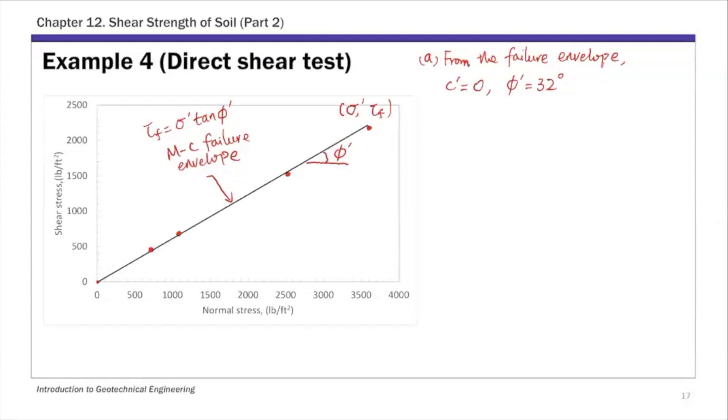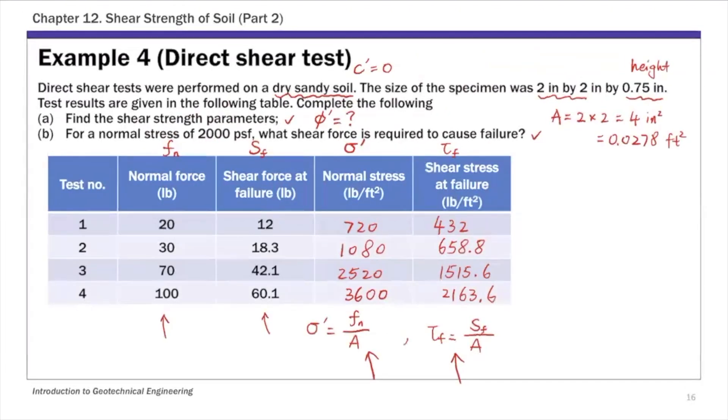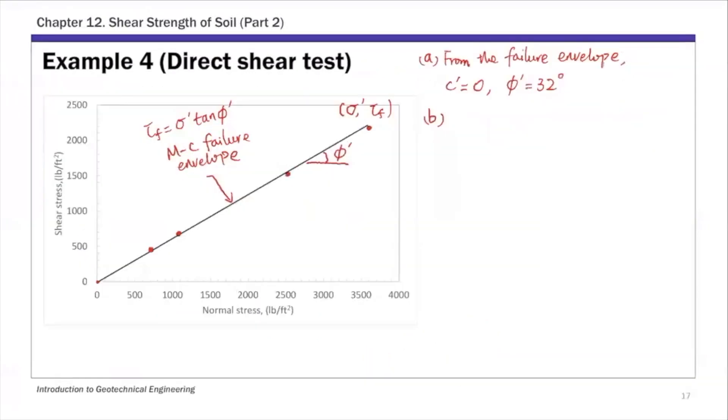For part b, we are given a new normal stress of 2000 PSF and we're going to predict what force is required to cause the specimen to fail. For this part we know sigma prime is 2000 PSF and we are asked to find the shear force at failure.